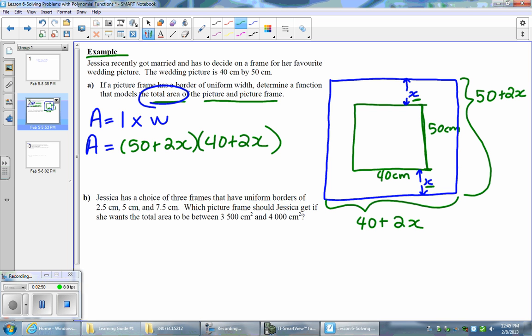That's one way of writing it, but also notice since we are working with functions here we can write area as a function of x and that's going to be equal to the same expression. There you go, there's two forms of writing this polynomial function.